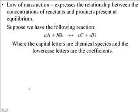How do we find what that K value is? Let's say we have a reaction where A reacts with B to make C and D. Notice the double arrow — the double arrow means the reaction is not only proceeding forward, it's also proceeding backwards. Like we said, they are occurring at the same rate.